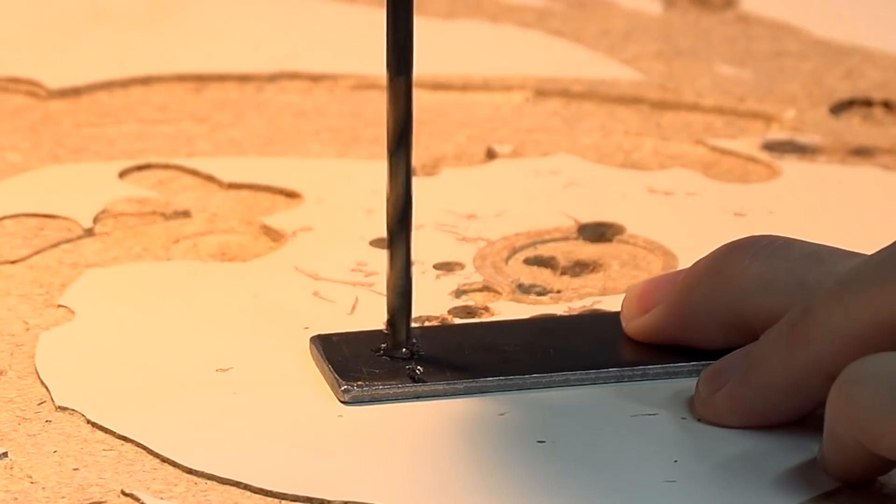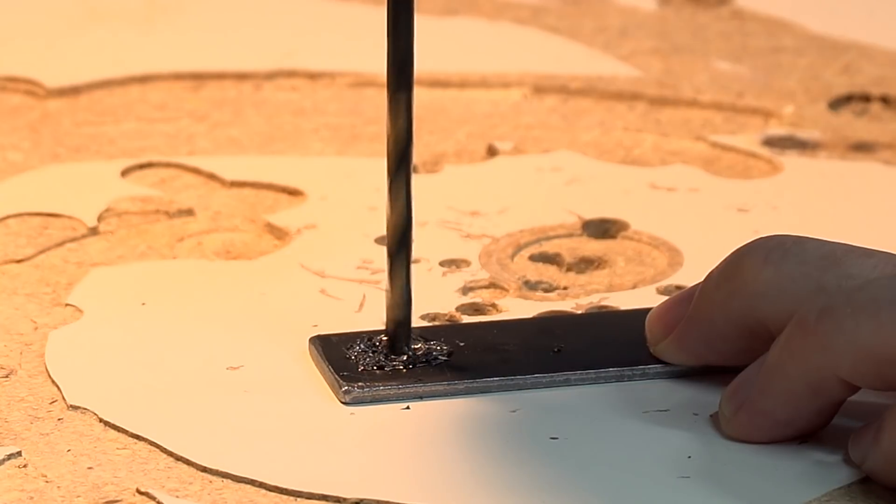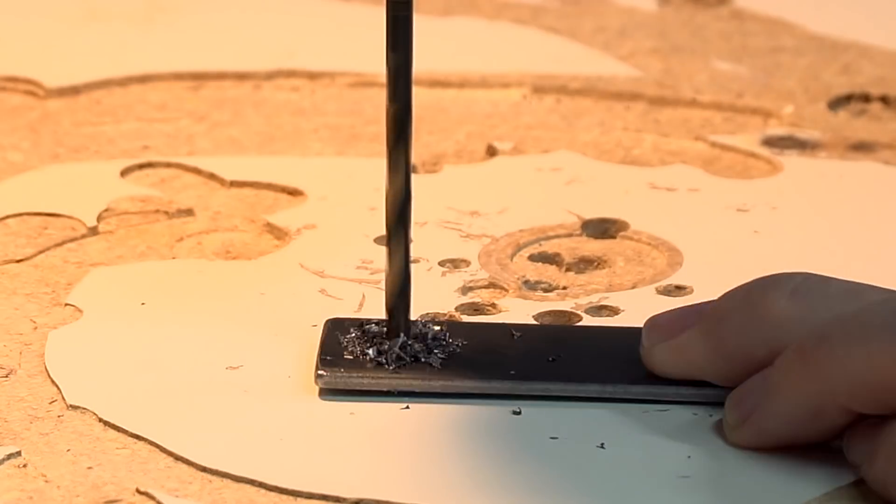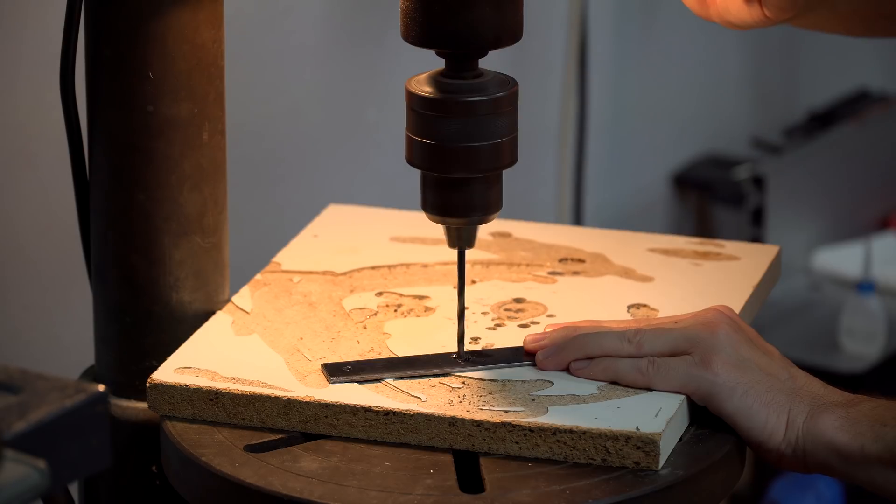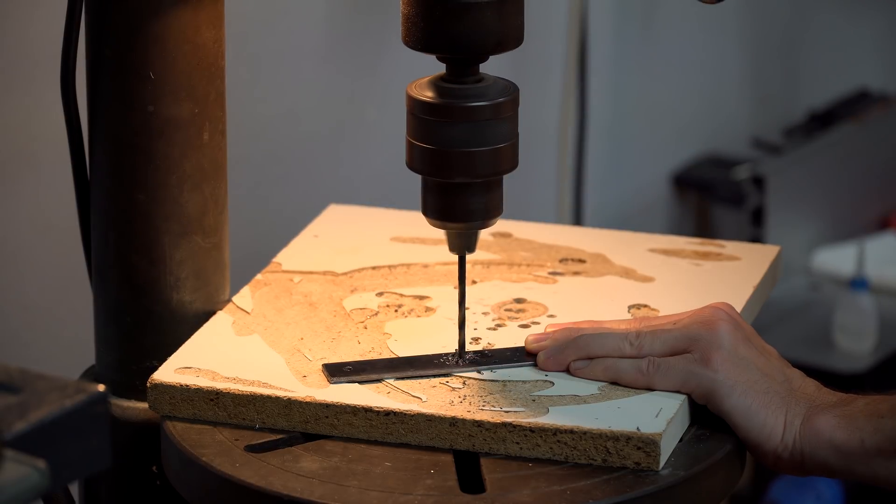For this first hole that I'm drilling, I'm actually using a bit that's almost exactly the same size as the outer diameter of the threads of the screws that I'm going to be using, which are number 8 screws.